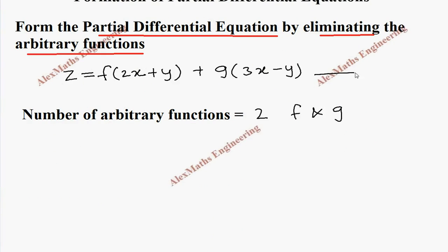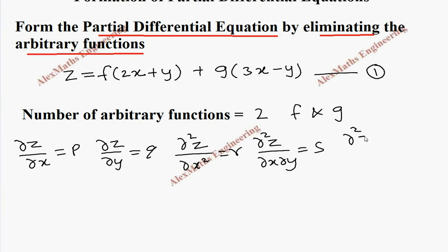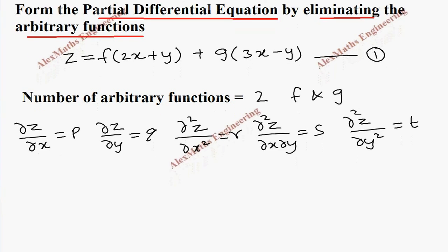Let's take this as the first expression. To eliminate the arbitrary functions, we are going to use ∂z/∂x which is p, then ∂z/∂y which is q, then ∂²z/∂x² which is r, then ∂²z/∂x∂y which is s, and ∂²z/∂y² which is t. We are going to use all of these to eliminate the arbitrary functions.